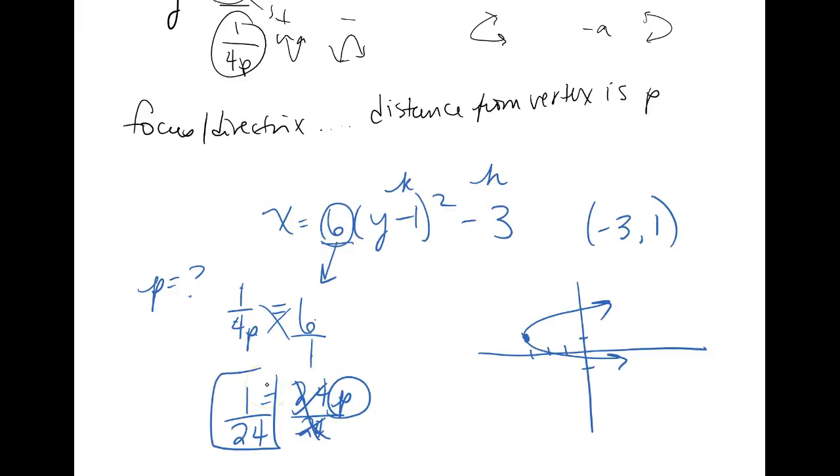That means my focus and my directrix are this distance away from the vertex. Now this is hard to graph and your teachers know this, so they're not going to be like overly critical of you. You just need to go, okay, 1 over 24, that's a really small number. So I need to go to the inside of the parabola, 1 24th. And the reason I go to the inside is because the focus is always on the inside of the shape. So my focus is that red dot right there.